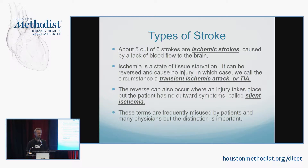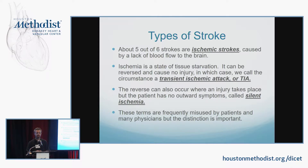About five out of six strokes we see are ischemic strokes in the US, though those numbers may differ depending on where you are in the world. Ischemia is that state of tissue starvation — it can be reversed, in which case we call that a TIA, or irreversible but not associated with clinical symptoms, which we call silent ischemia. The terms are sometimes misused; patients may say their CAT scan showed a lot of TIAs, but a CAT scan showing many features would show silent ischemia.